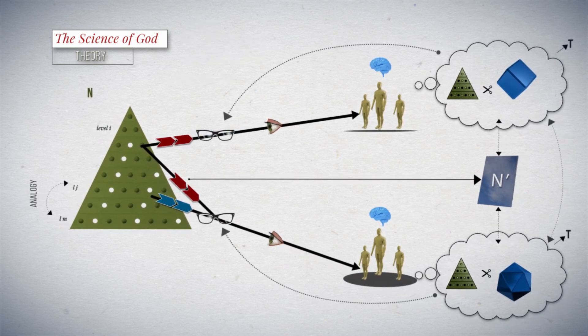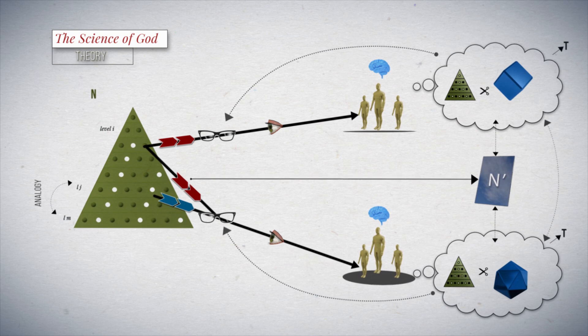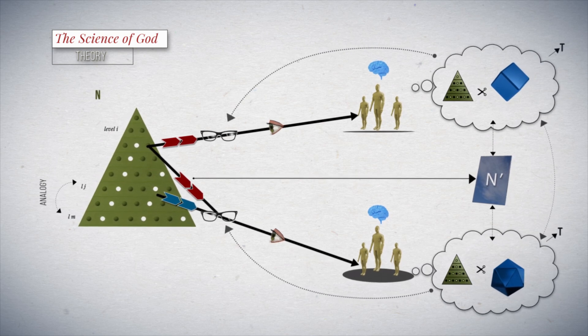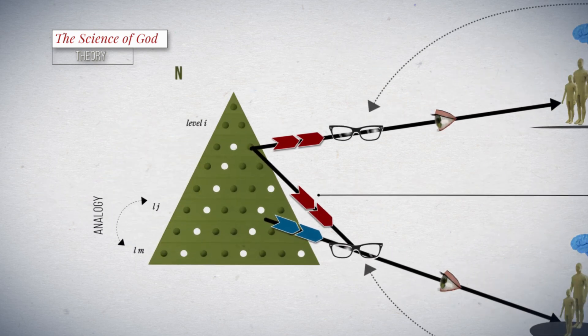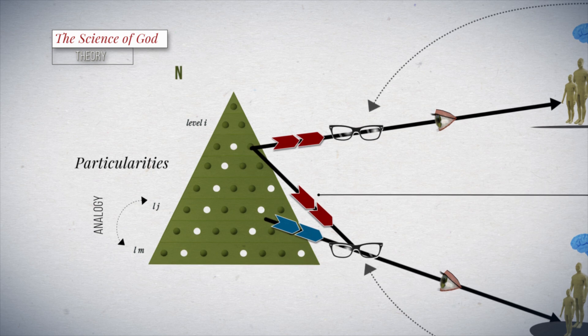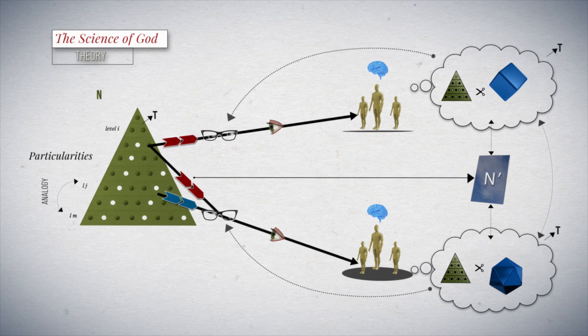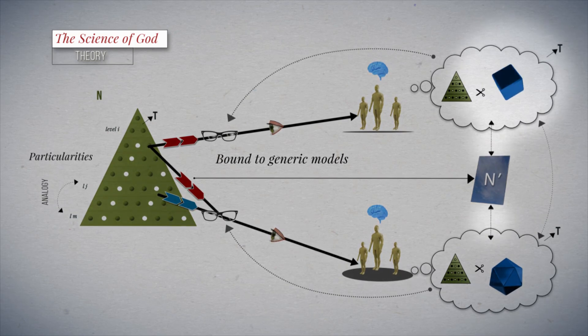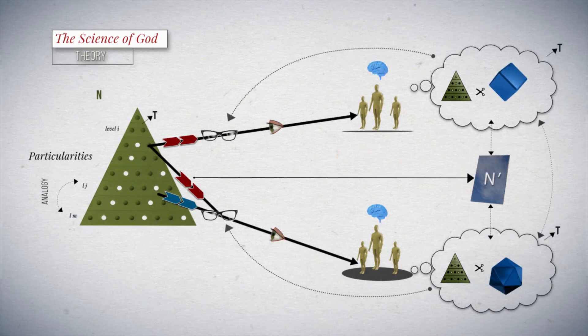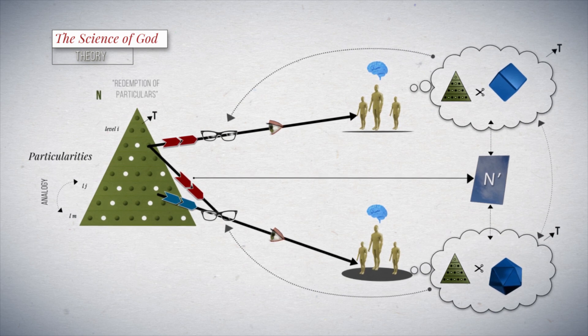Therefore, in theorizing, it is important not to lose sight of the particularities of reality and the processes by which they develop over time. So that the theories are not bound to generic models that do not adequately respond to what is observed, this recommendation is known as the redemption of particulars.